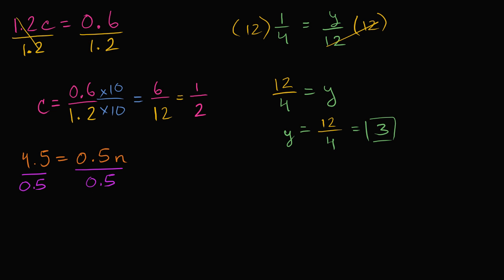So this is going to be, on the left hand side, I have 4.5 over 0.5. 4.5 over 0.5 is equal to n, because you have 0.5 divided by 0.5. You're just left with an n over here. So what is n equal to?